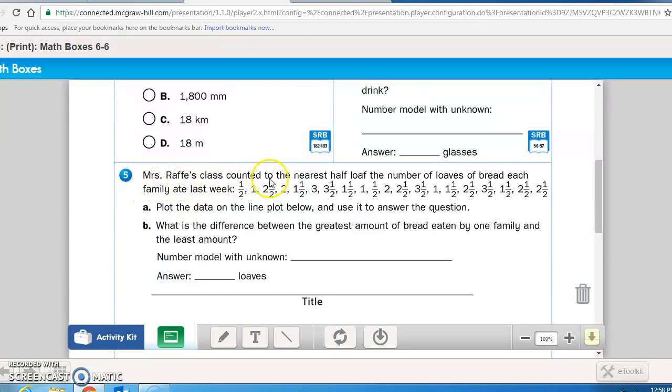And math box five reads, Mrs. Rafe's class counted to the nearest half loaf of number of loaves of bread each family ate last week. Plot the data on the line plot below and use it to answer the questions. What is the difference between the greatest amount of bread eaten by one family and the least amount? Show your number model with the unknown and give the answer. Make sure to fill in the title for this graph.